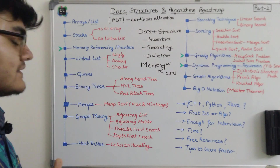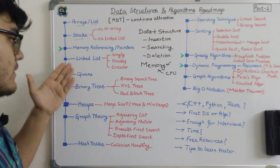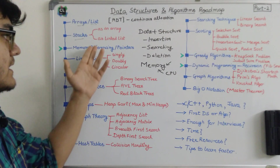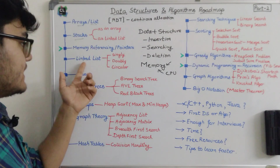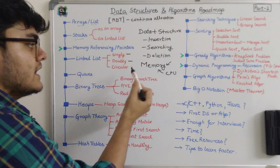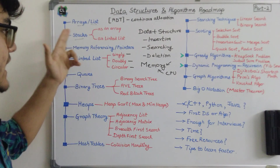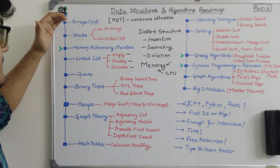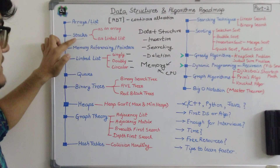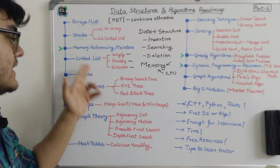We're studying memory referencing and pointers because all the topics in data structures are going to use referencing or pointers. For example, linked lists can be of three types: singly linked list, doubly linked list, and circular linked list. I've aligned the data structures in order — you should start from arrays, then stacks, then linked lists.